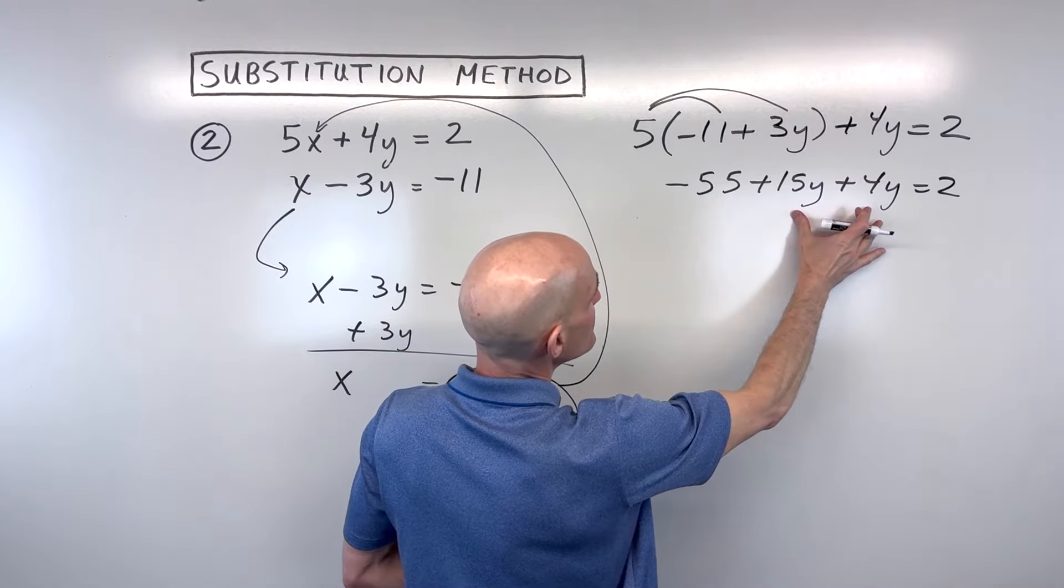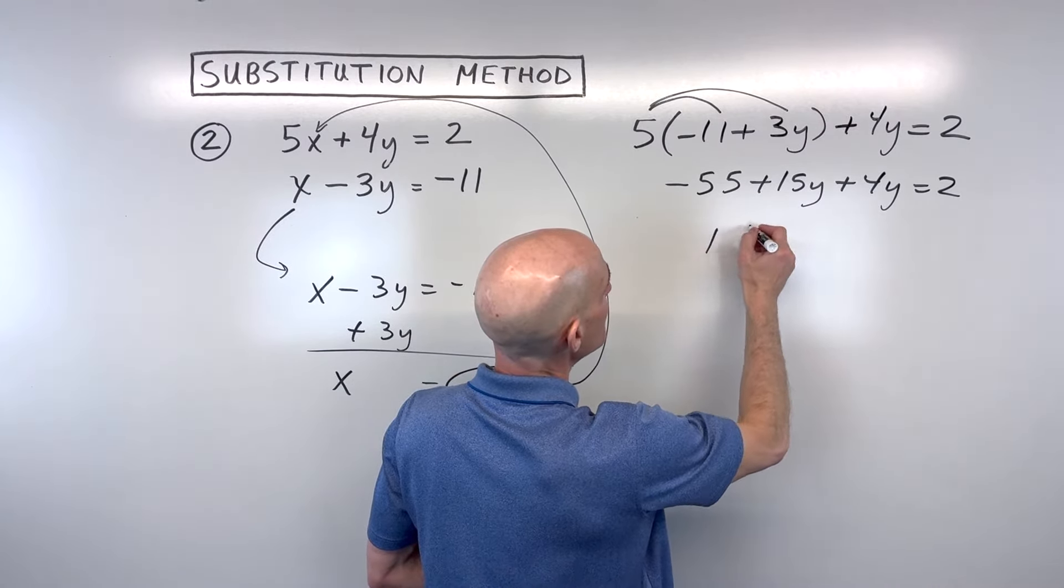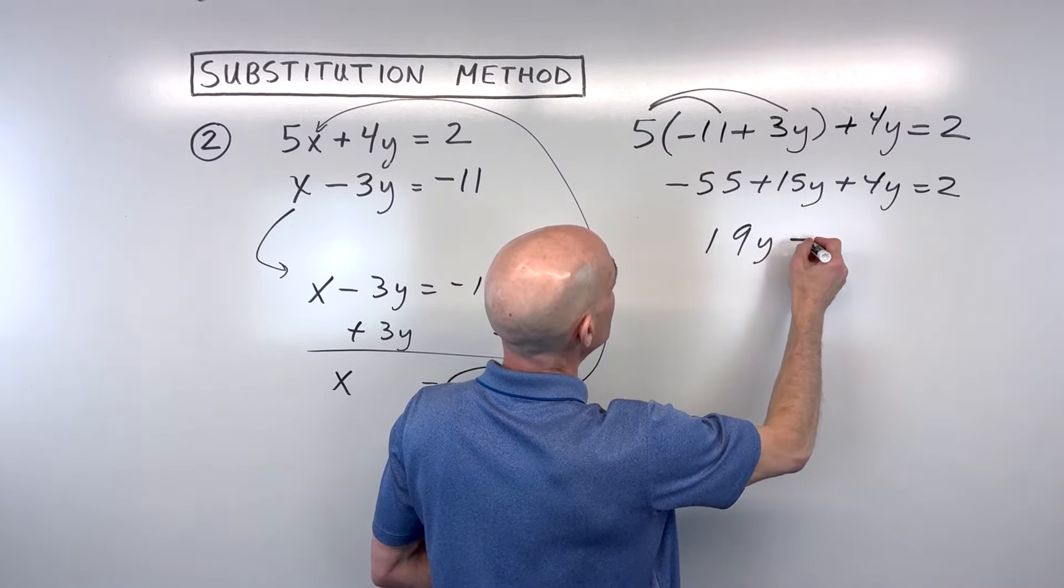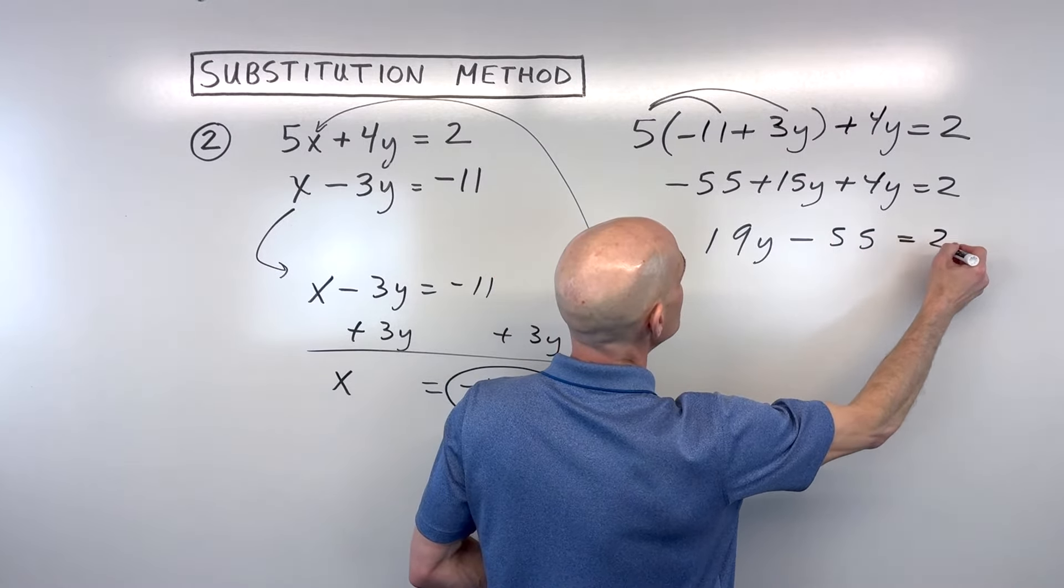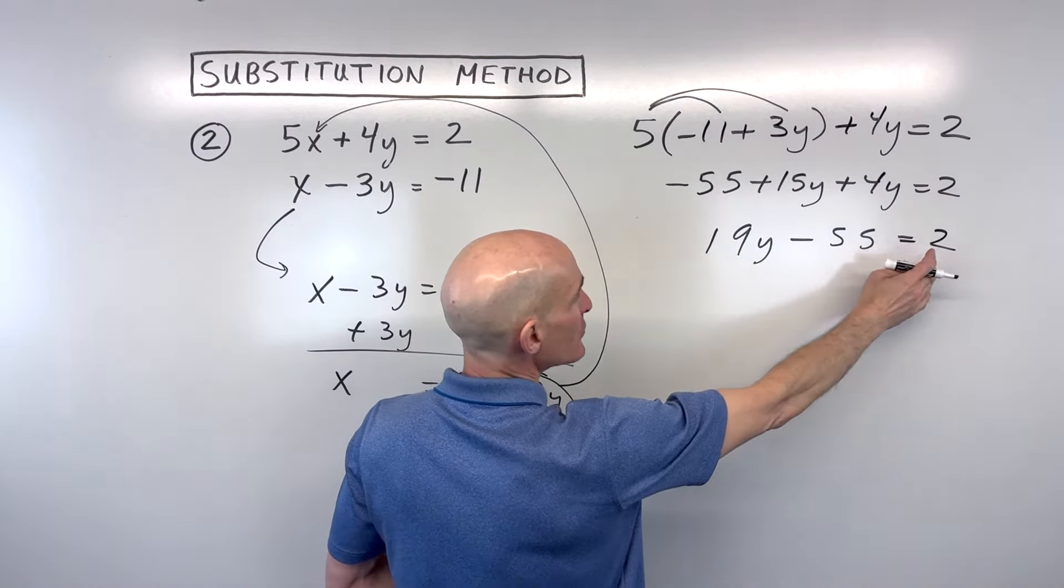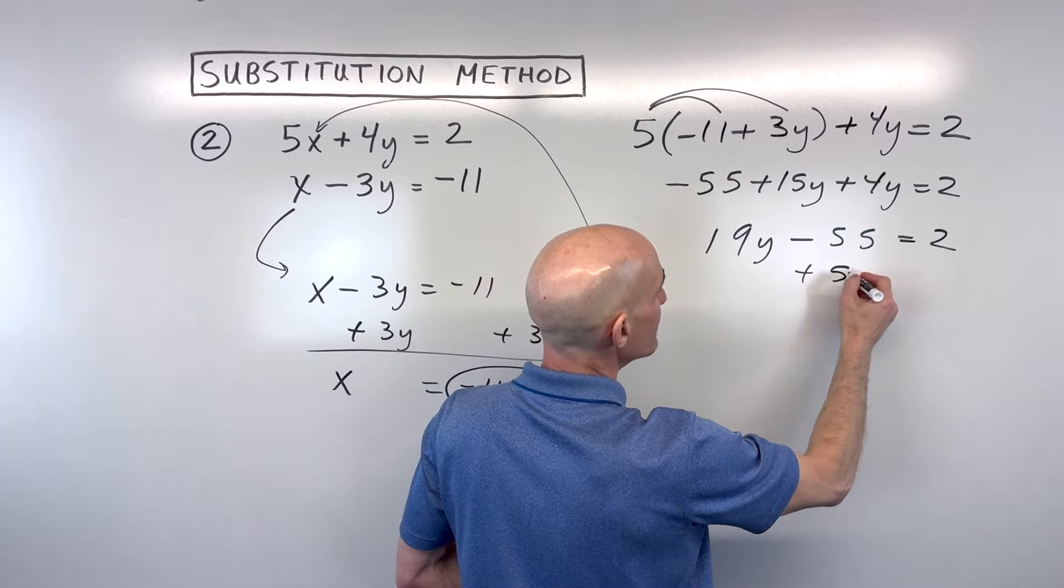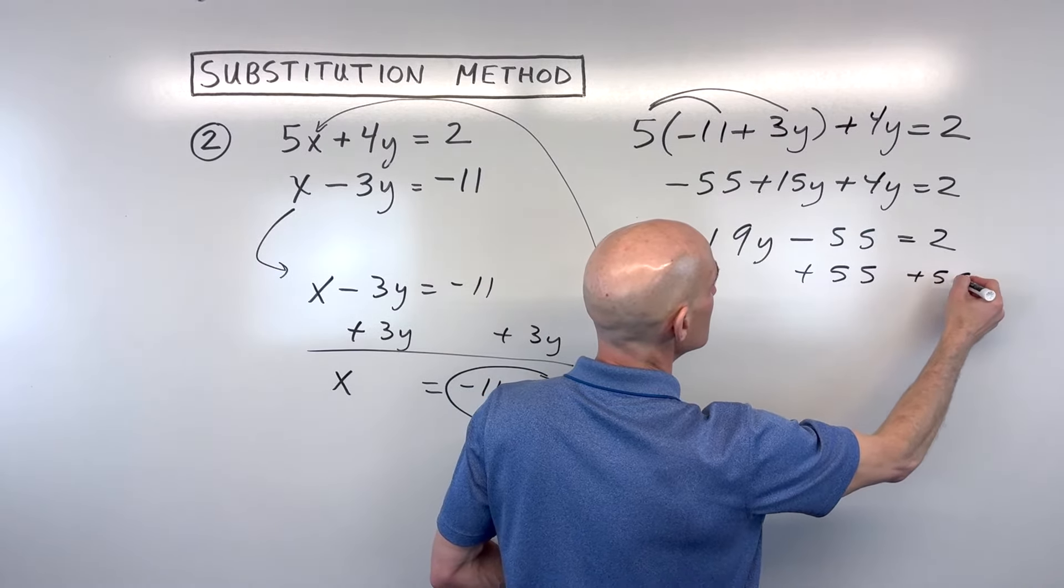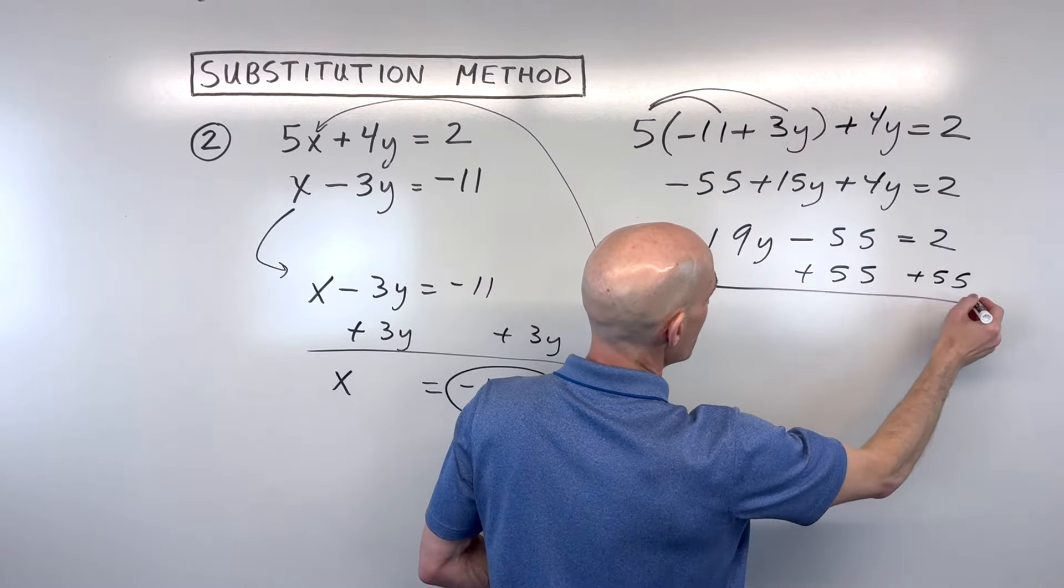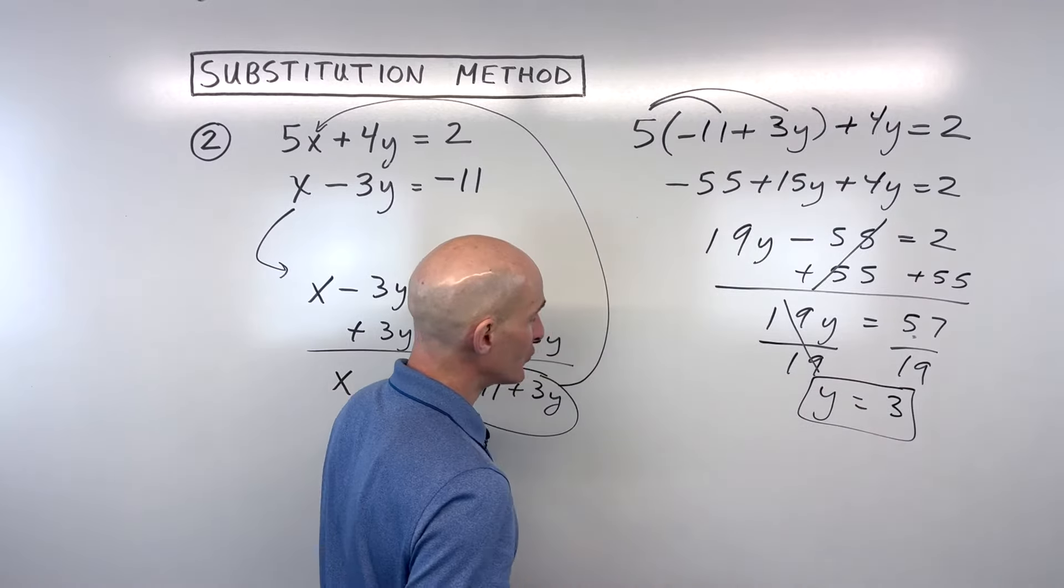Let's combine like terms. 15y plus 4y is 19y minus 55 is equal to 2. We want to get the variables and numbers on opposite sides, so let's go ahead and add 55 to both sides. Keep that equation balanced. We get 19y is equal to 57, and we just want to solve for 1y, so let's divide both sides of our equation by 19. 19 divided by 19 is 1y. 57 divided by 19 is 3. Now we know what y is equal to.